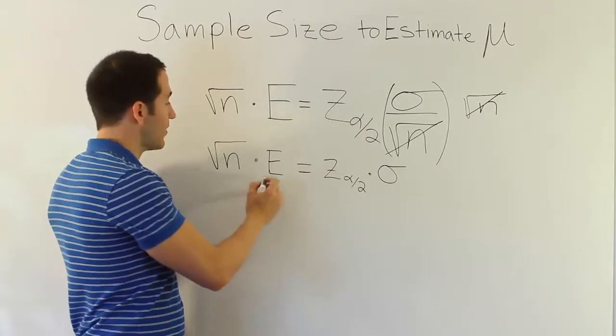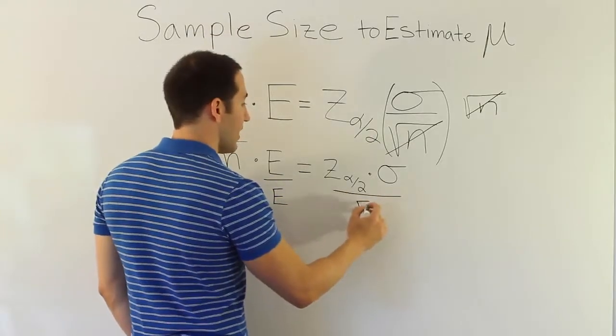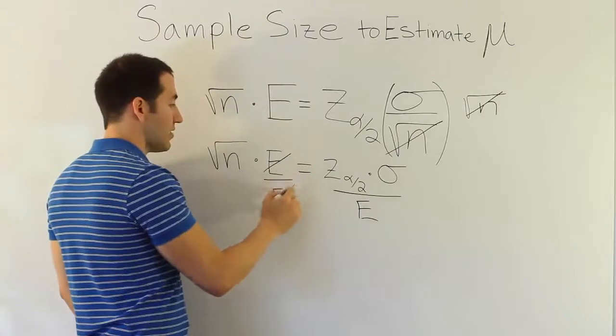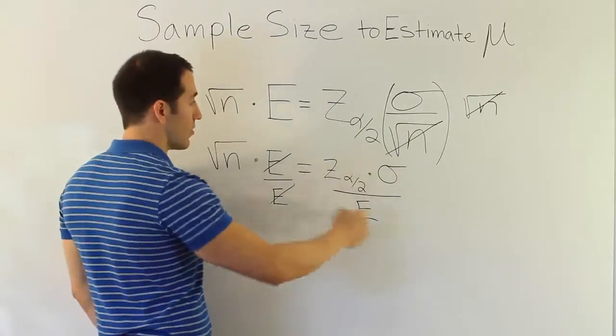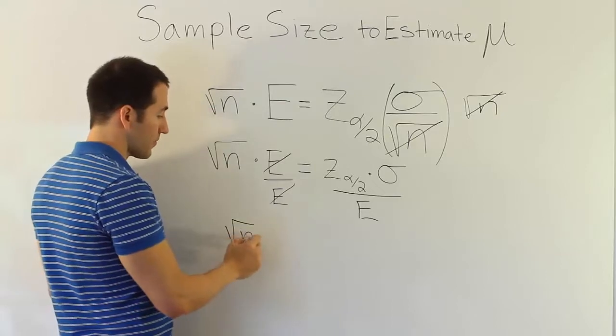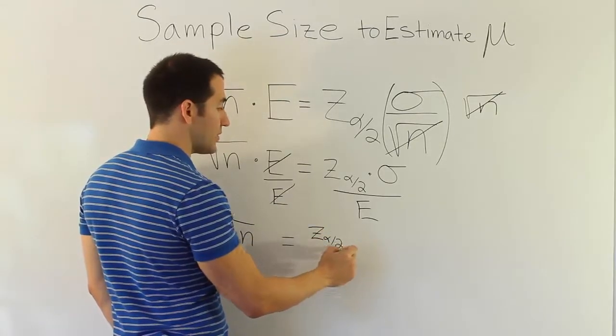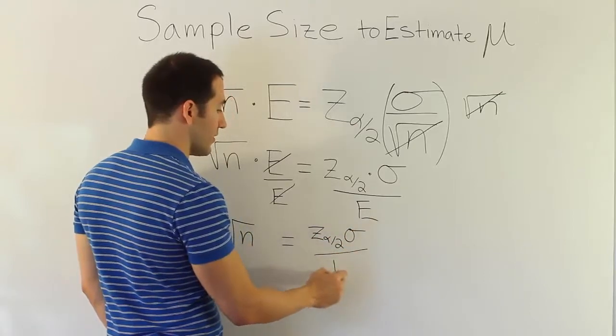Now I want to get n by itself, so I'm going to divide e by both sides, right? So into both sides and I end up with the e's canceling out and I get this expression here. So finally I end up with the square root of n is equal to z alpha divided by 2 sigma over e.